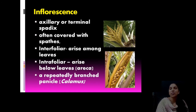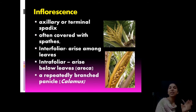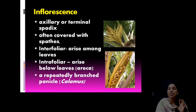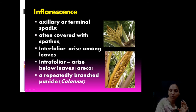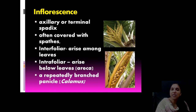Looking into the inflorescence — it is well known and usually used in festival seasons, marriages, and certain traditions. This inflorescence is actually protected inside a cover called a spathe. The inflorescence is a spadix. It is covered inside a protective sheath called spathe. It is produced in the foliar region, between the leaves. In some cases it is a branched panicle — example, calamus.